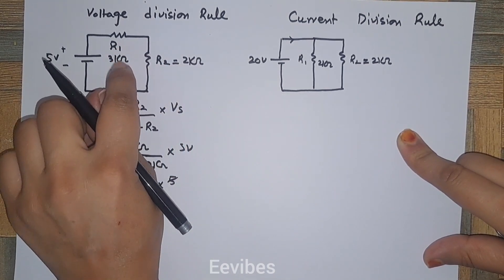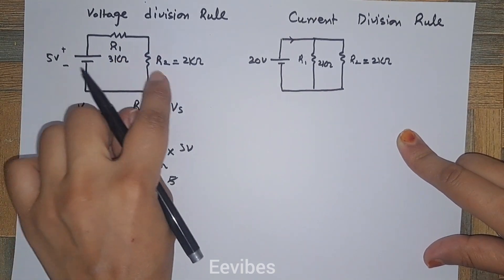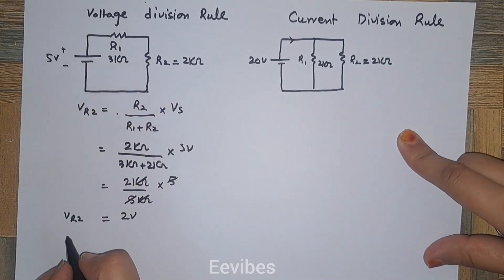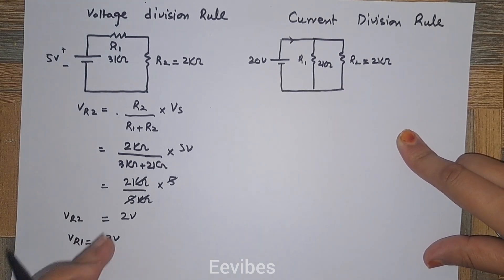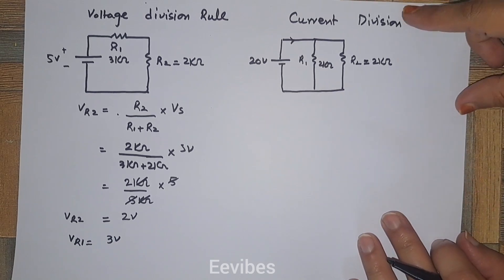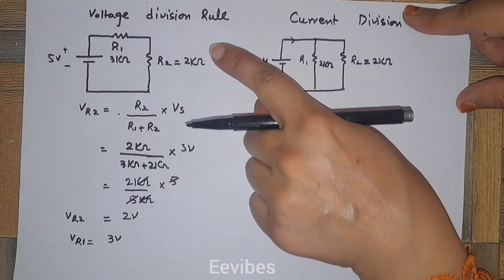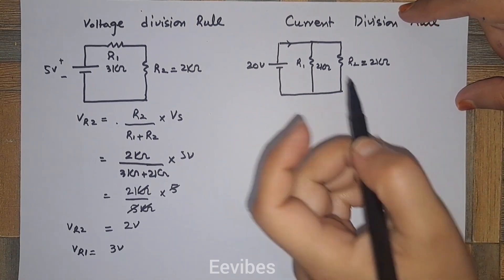3 volts will be developed across resistor R1, so 2 plus 3 equals 5. If VR2 is equal to 2 volts, then VR1 will be equal to 3 volts. In this way, the voltage division rule is applied when two resistors are connected in series.